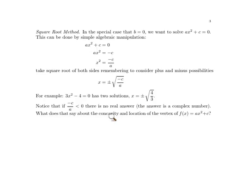You might ask yourself what does it mean if negative c over a is negative? Then, of course, algebraically it's saying that there is no real solution, so there is no x-intercept. What does that mean about the location of the vertex and the concavity of the function ax squared plus c?